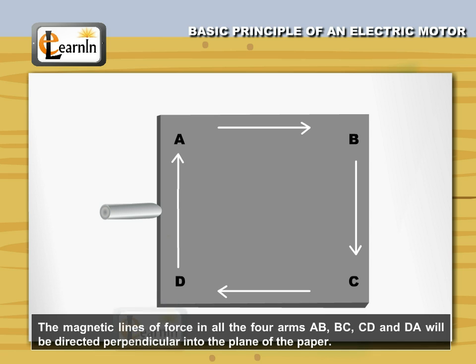Now imagine that the magnetic lines of force in all four arms AB, BC, CD, and DA will be directed perpendicular and into the plane of the paper.